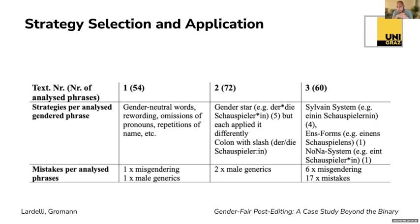In the third text with new systems, four participants selected the Silva system because it has a very complete and developed set of grammar rules — an actor would be translated as 'einen Schauspielenis'. One person selected the '-ens' forms, which are relatively easy since the suffix '-ens' is used consistently as pronoun, article, and suffix. Another person used the Nona system, 'eins Schauspielenis', which mixes approaches. In every translation I found one instance of misgendering — because the term 'nanny' had to be translated — and also 17 mistakes in the application of the system, including wrong pronoun forms and declension errors.